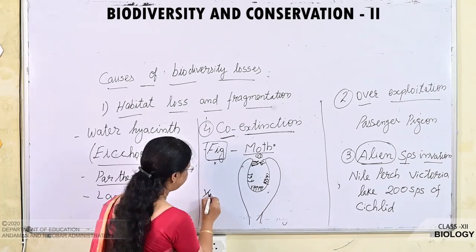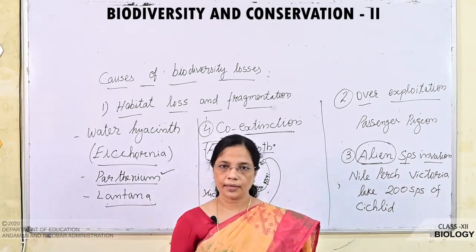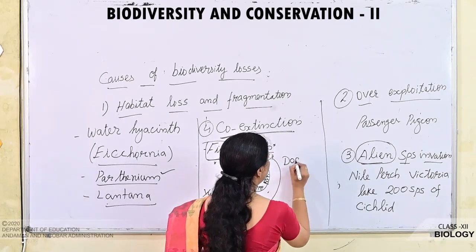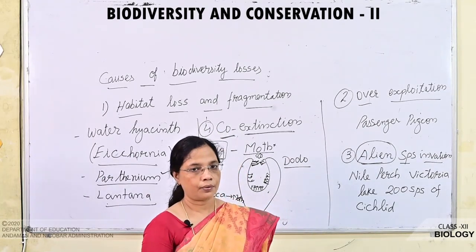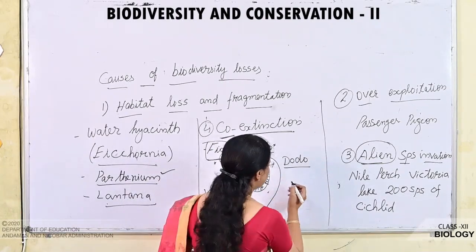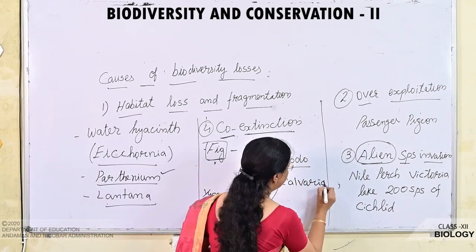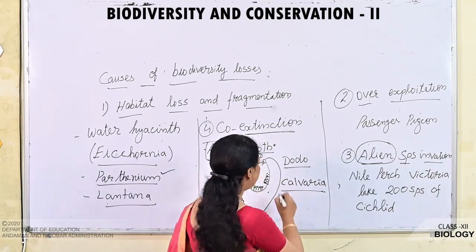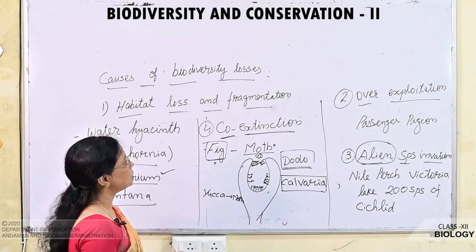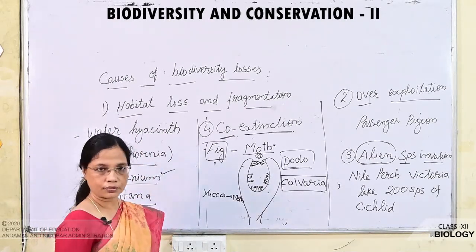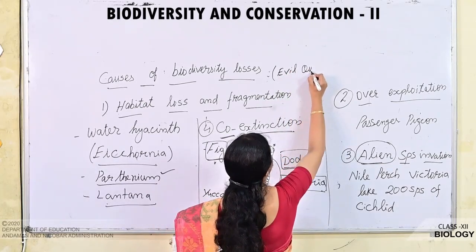Another example of co-extinction is the Yucca plant and its specific moth. Also, Dodo — which is already extinct — had a mutualistic relationship with the Calvaria plant in Mauritius, which has now also started going extinct from the earth. These four causes of biodiversity loss are together known as the Evil Quartet — 'quartet' meaning four evil things that cause the loss of biodiversity.